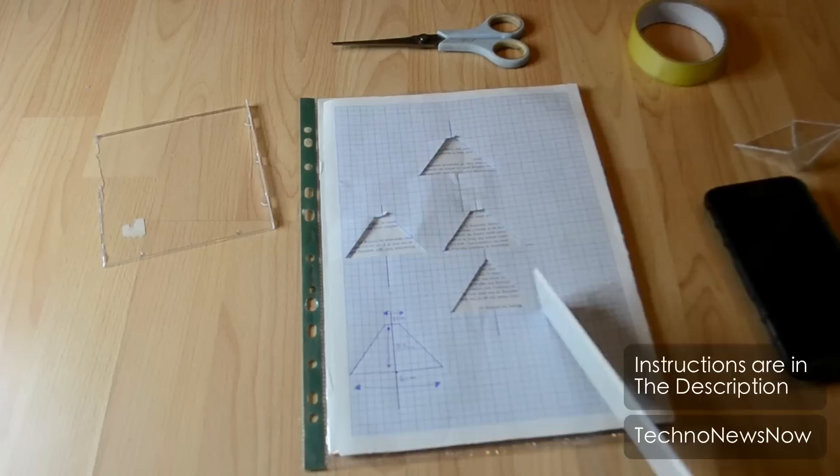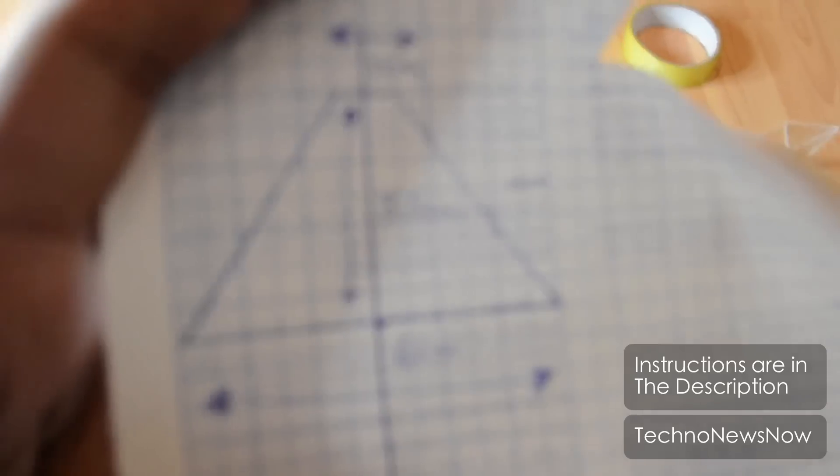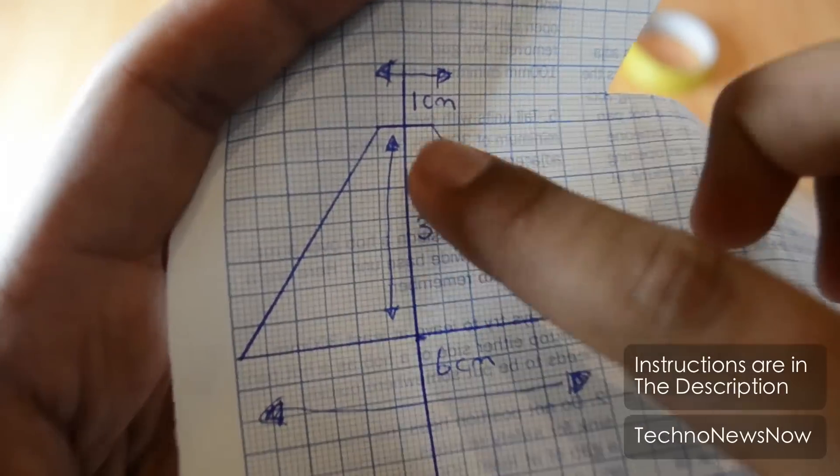First you want to go ahead and grab your pen and ruler on the graph paper and you want to draw this rhombus shape. Now try and copy the measurements exactly. You can double it and triple it.